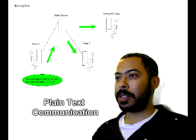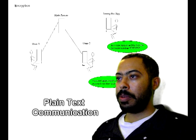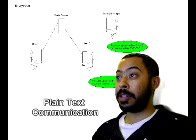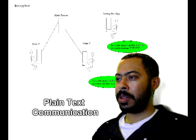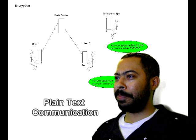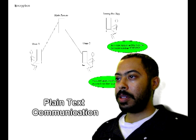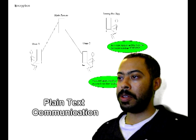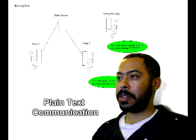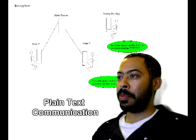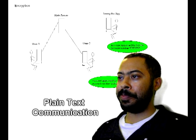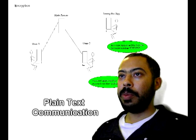After User 2 and the spy have downloaded the information in plain text, they can both view it on their computers. Account approved for $1600, account number 555, and so on. It did make it to the intended recipient, but the problem is that Timmy the spy can also pull down that same information and read it in plain text with no effort.